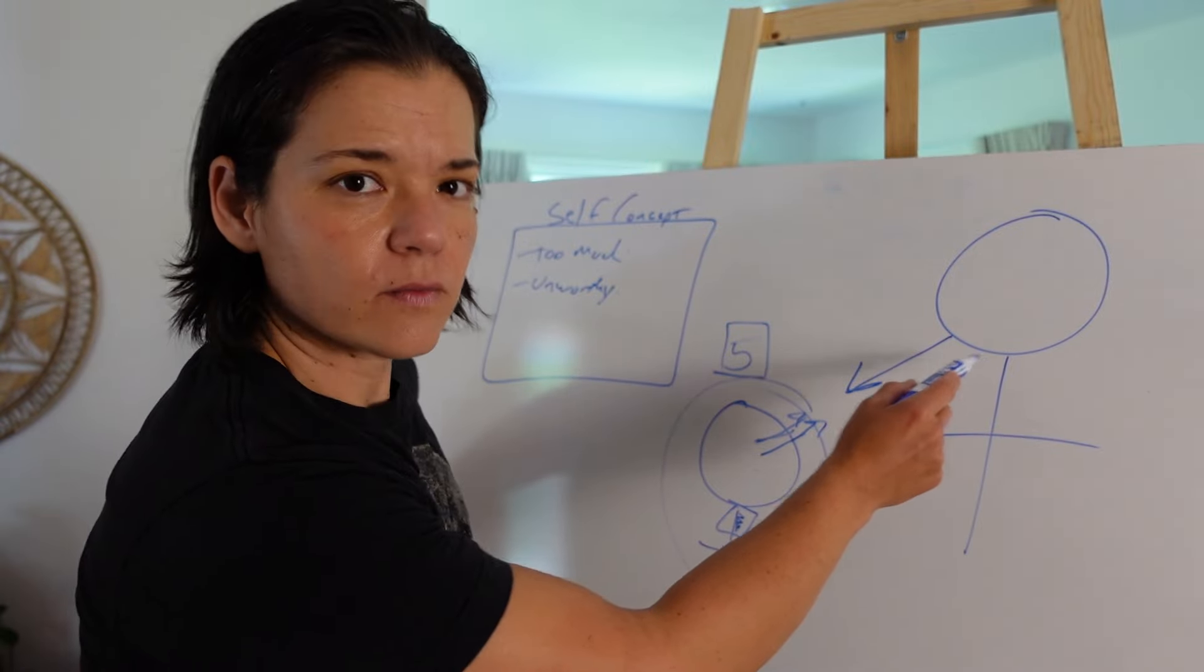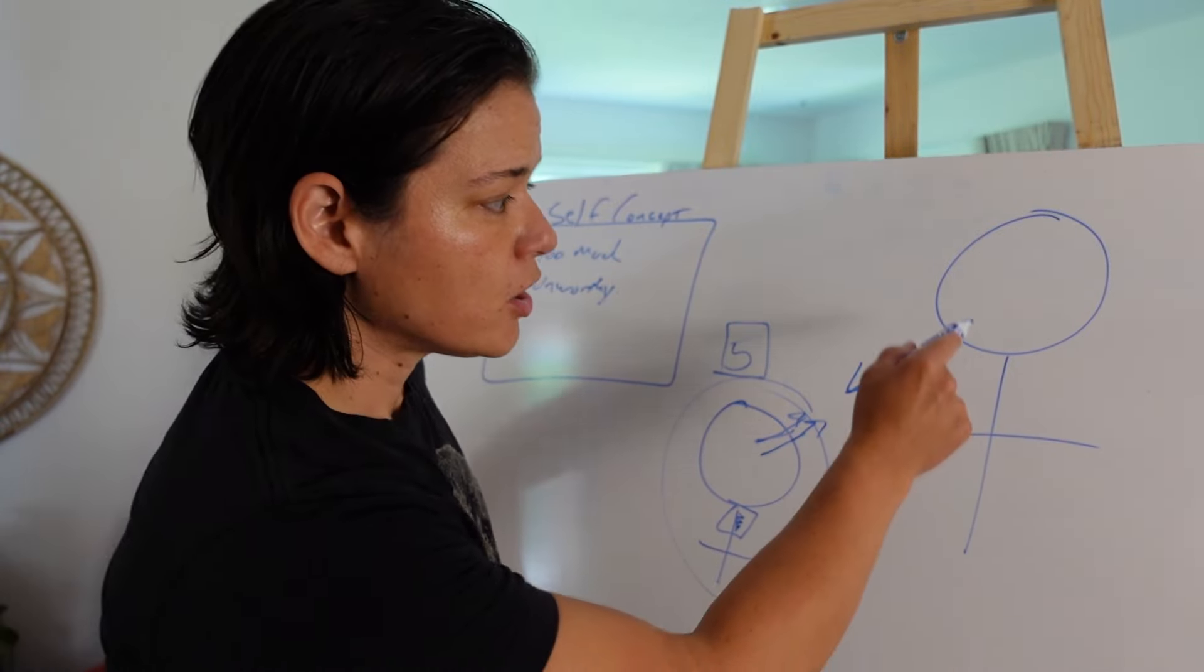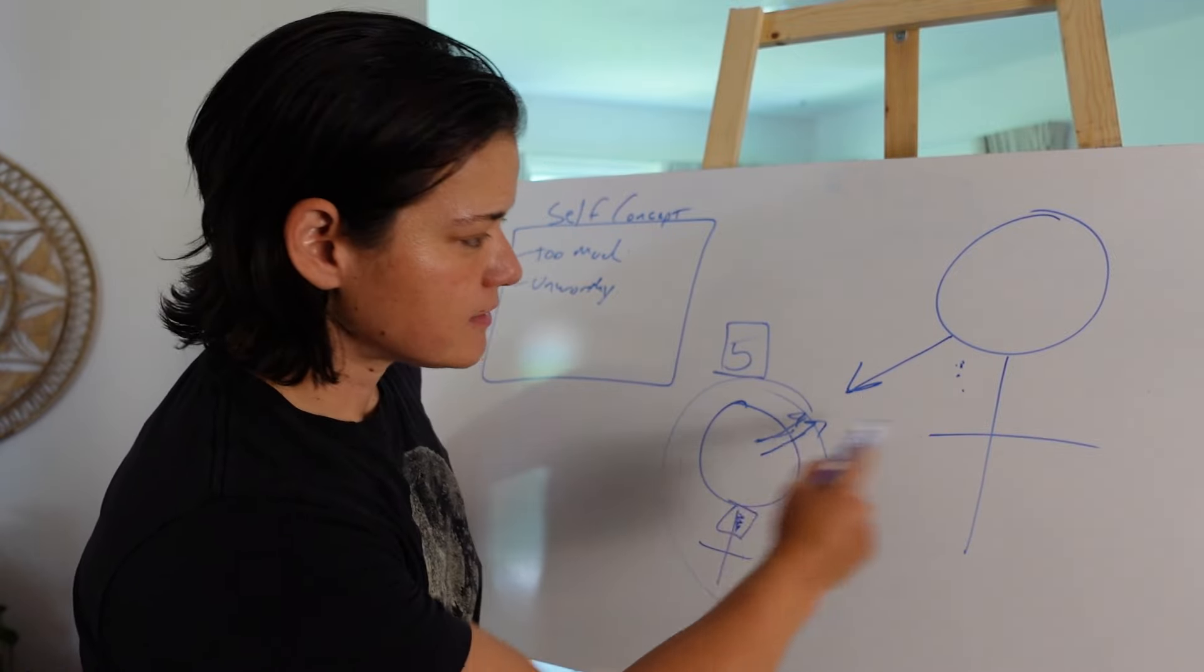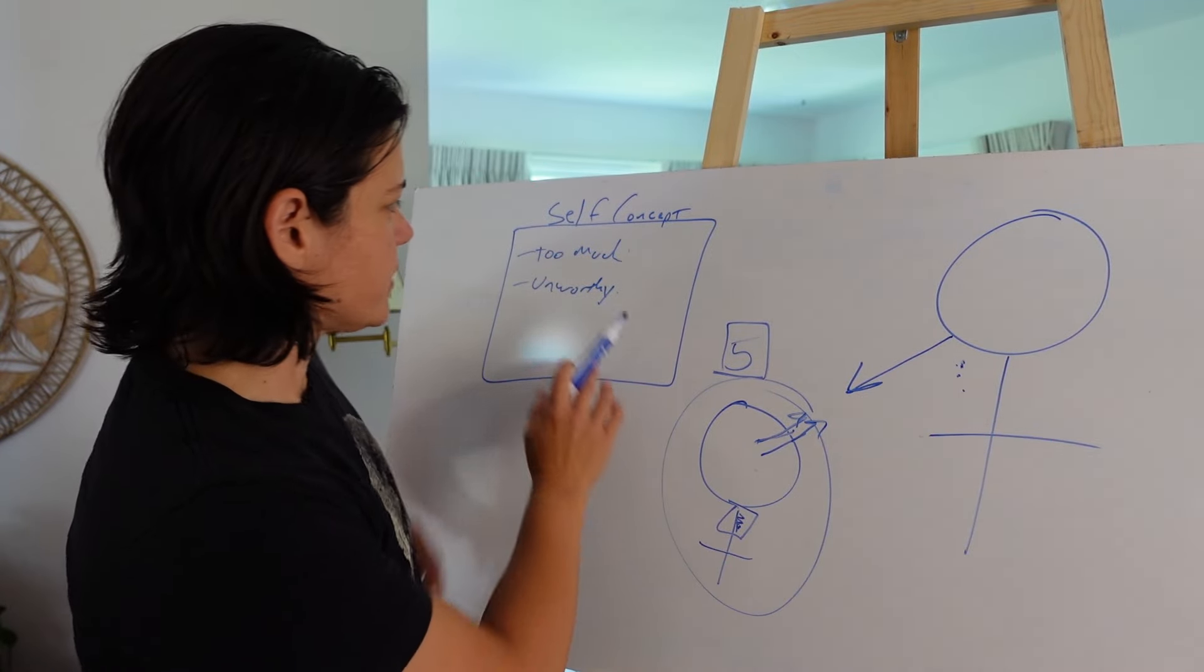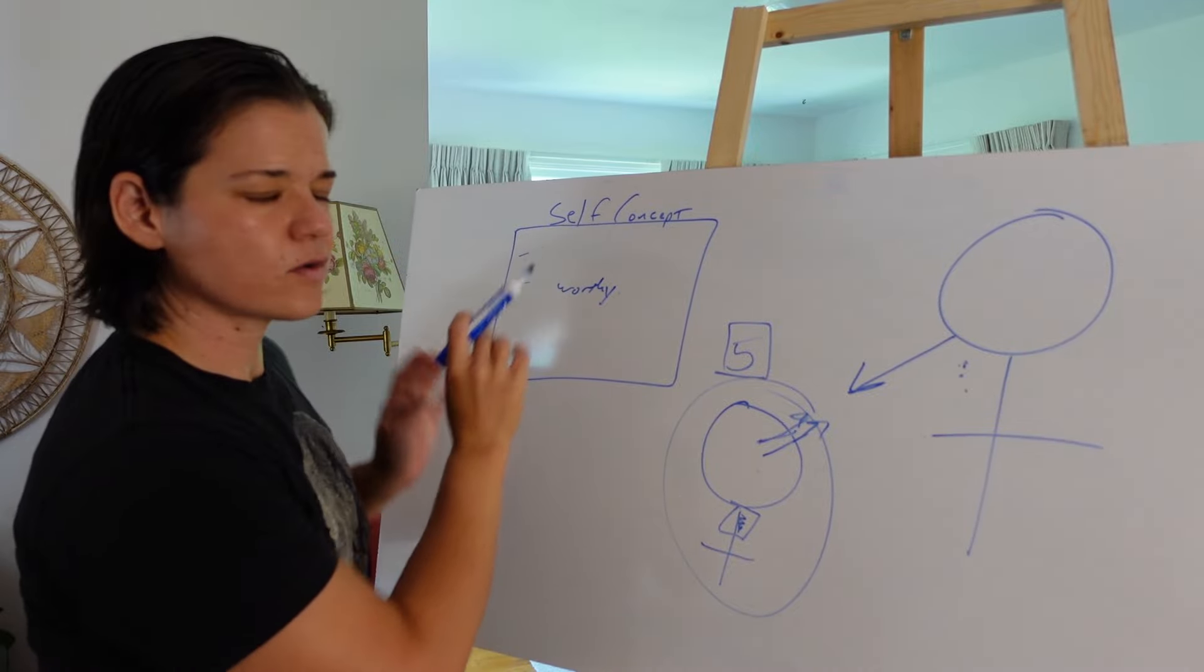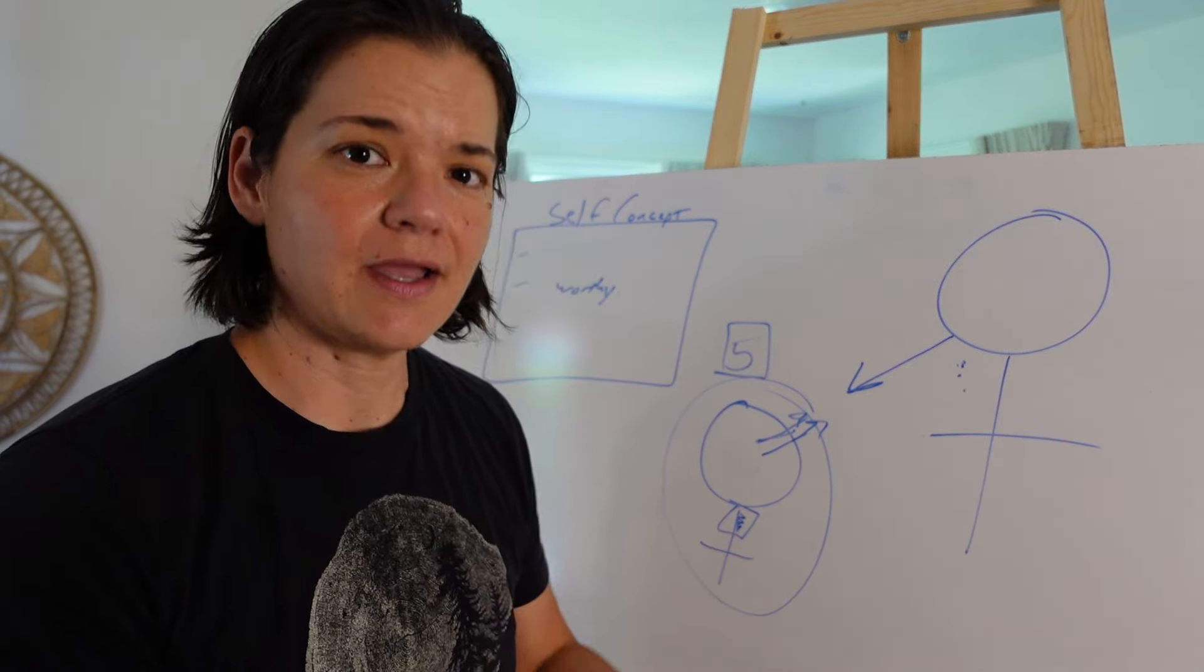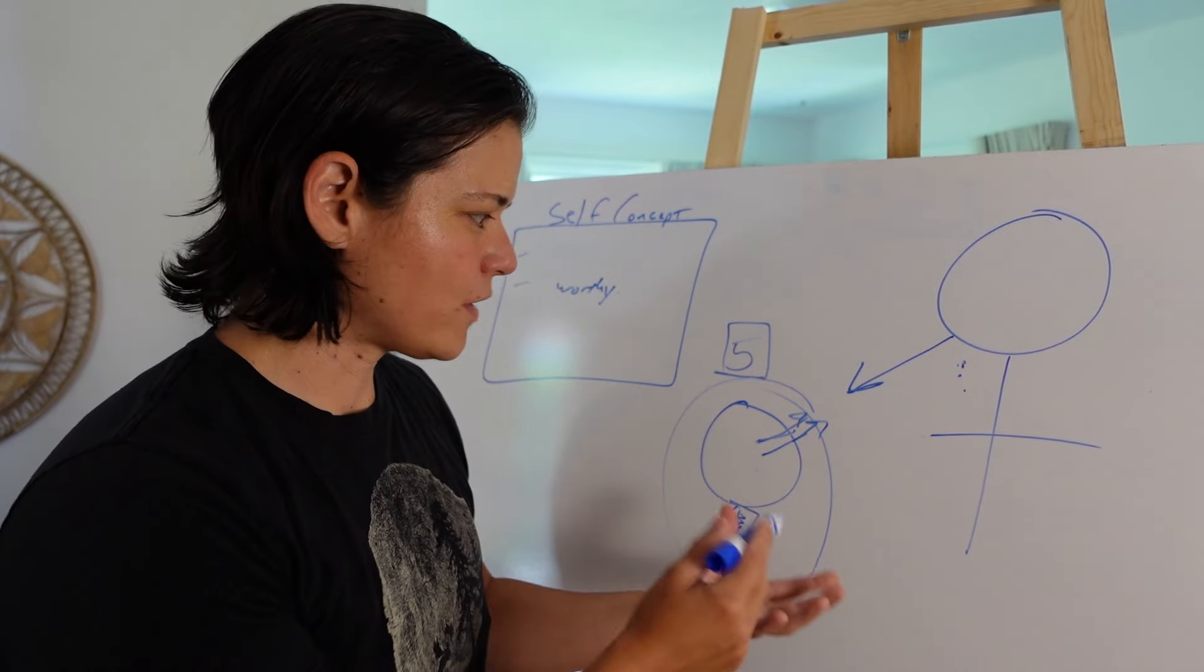No. I think that we can agree that we would both look at that adult like, what is wrong with you? You are being inappropriate. You are the limitation in this situation. This child has never been too much. This child has never been unworthy. This child is beautiful, delicate, deserving and worthy of what they need.